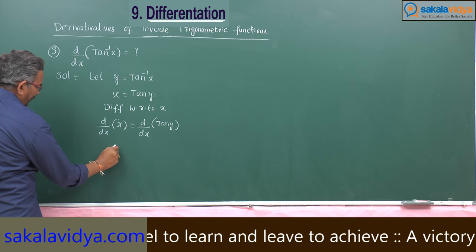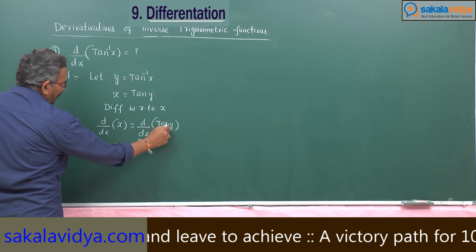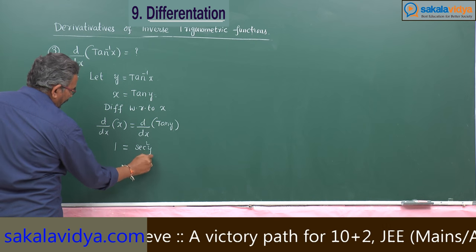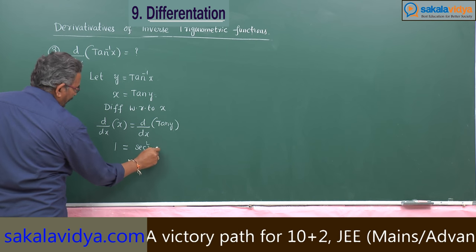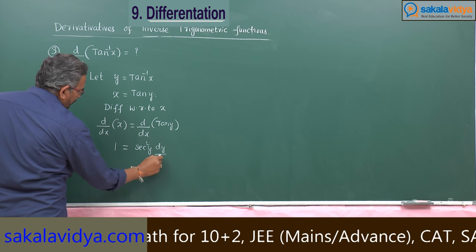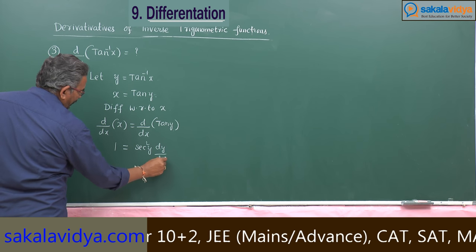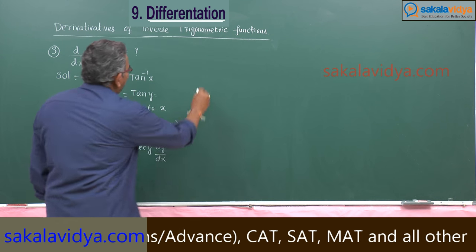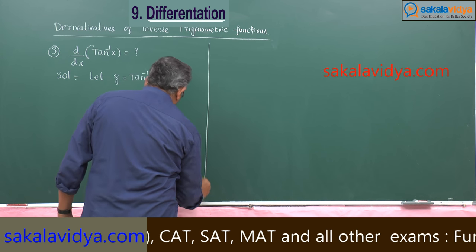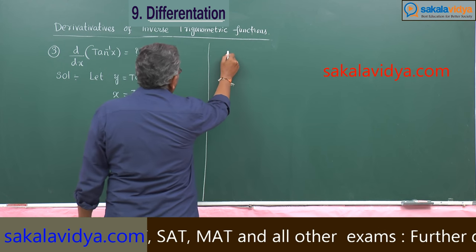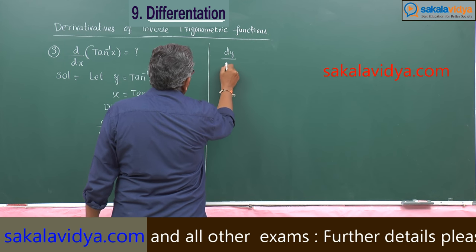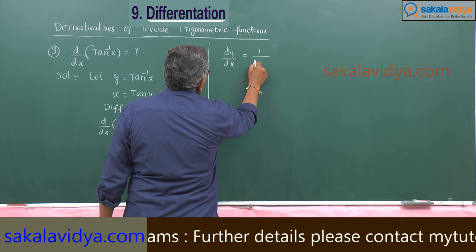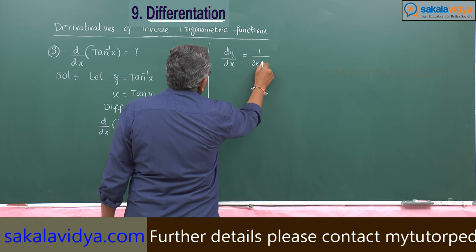Derivative of x is 1. Differentiation of tan y gives secant square y, and y's derivative is dy/dx. So our aim is to find dy/dx. Therefore, dy/dx is equal to 1 by secant square y.